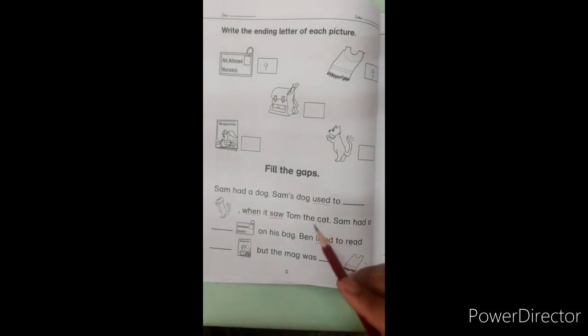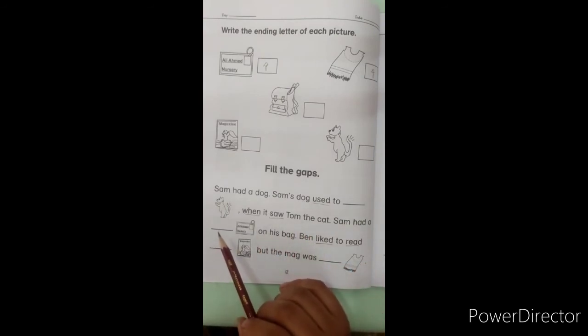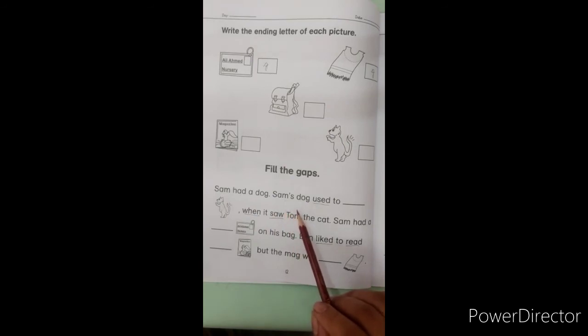Okay, you have to read this good way. If you remember this story I will tell you a little more about it. Okay, now I will tell you some of them. Sam had a dog. Sam's dog used to wag. Sam's dog used to wag. The dog used to wag. Sam's dog used to wag. When it saw Tom the cat.